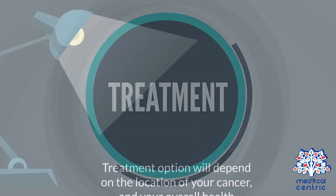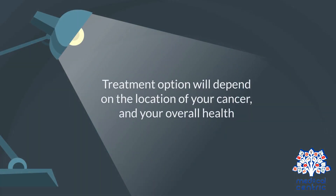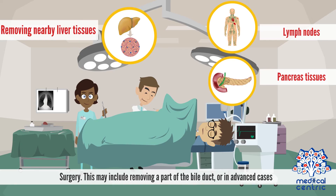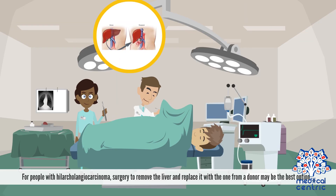Treatment options will depend on the location of your cancer and your overall health. Surgery may include removing a part of the bile duct, or in advanced cases, removing nearby liver tissues, lymph nodes, or pancreatic tissues. For people with hilar cholangiocarcinoma, surgery to remove the liver and replace it with one from a donor may be the best option.